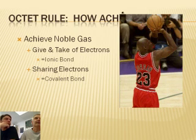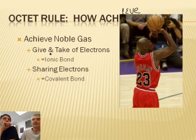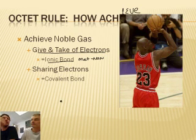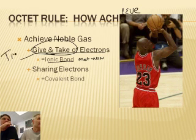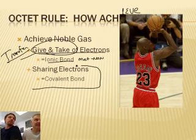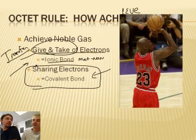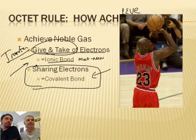So how do atoms achieve eight? They all want eight — how do they get there? In an ionic bond — remember, that's a bond between a metal and a non-metal — what they do is give and take electrons. An electron is transferred completely from one atom to the other. For a covalent bond, instead of transferring the electrons, they share. There's a whole podcast on each of these topics. We will see you in class, or if not, we'll see you on the internet. Goodbye.